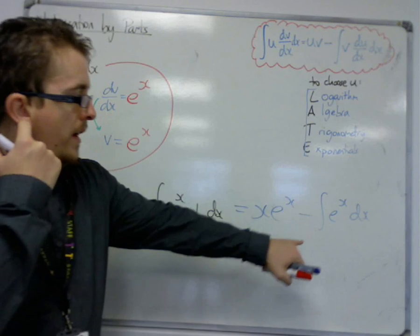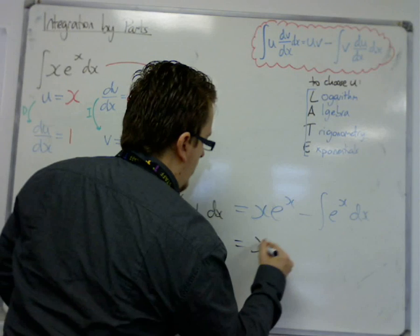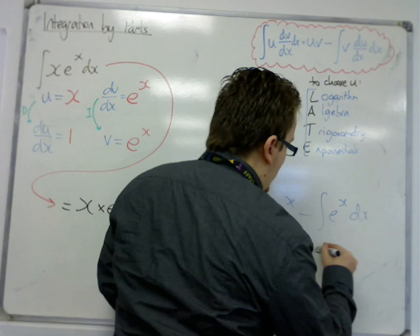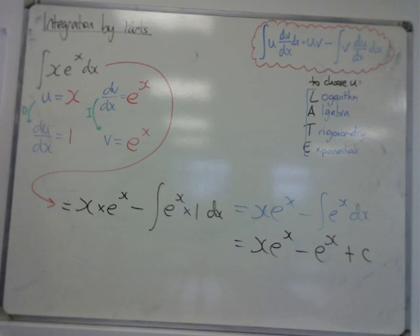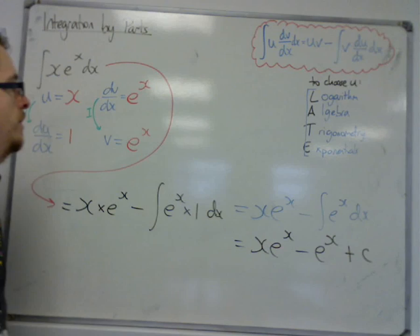So lastly, we now have an integral that we're able to do straight off. Brilliant. We go xe^x, and the integral of e^x is e^x, that's just e^x. And don't forget to put your plus c on the end here. We wait until the very end to put the constant of integration into our answer.